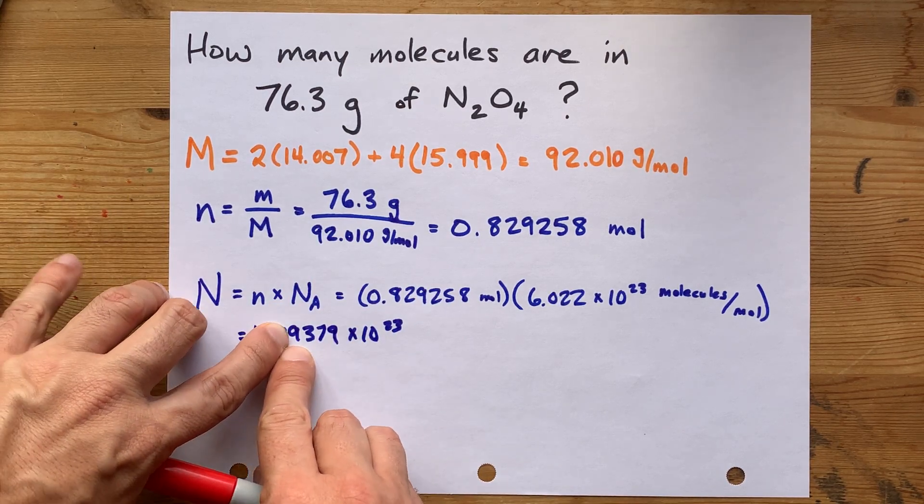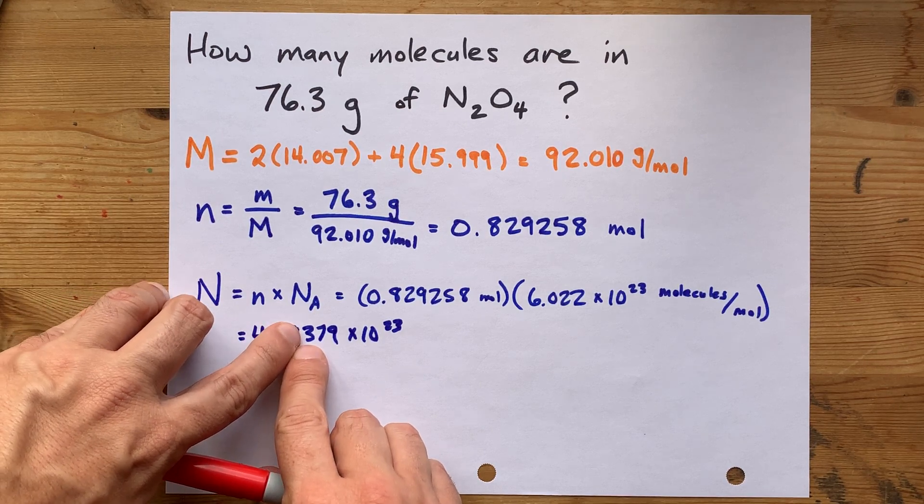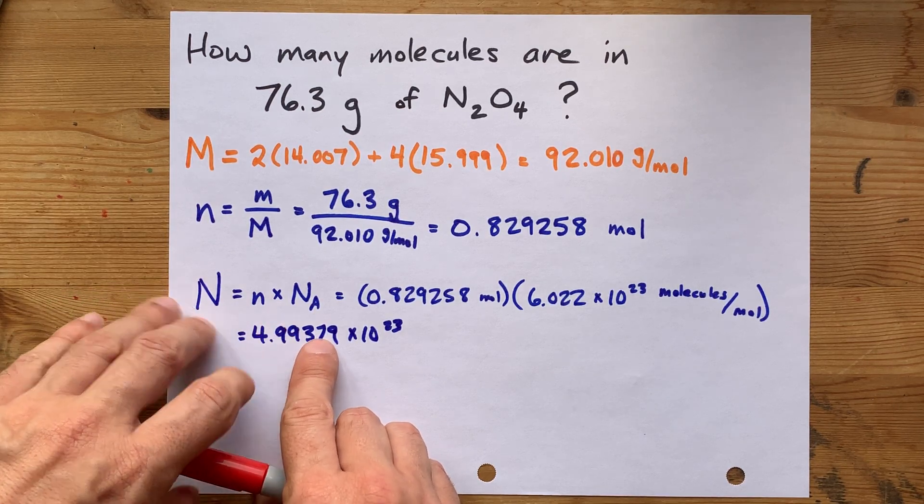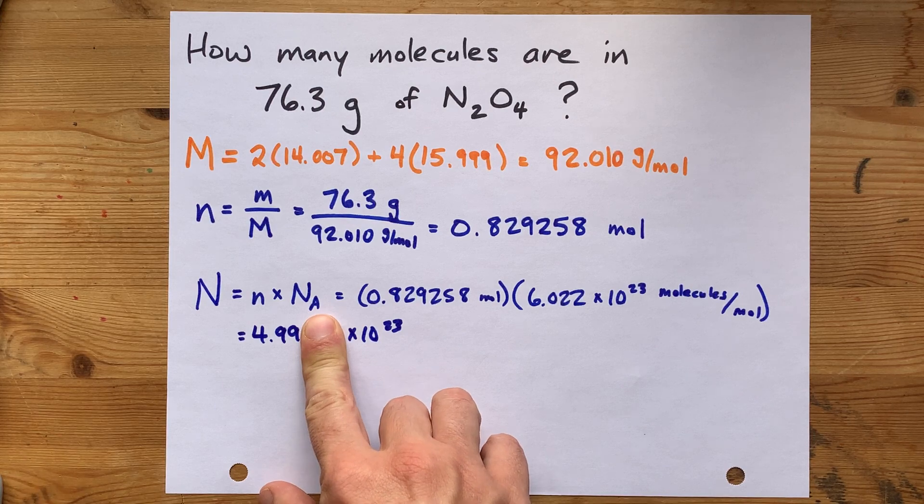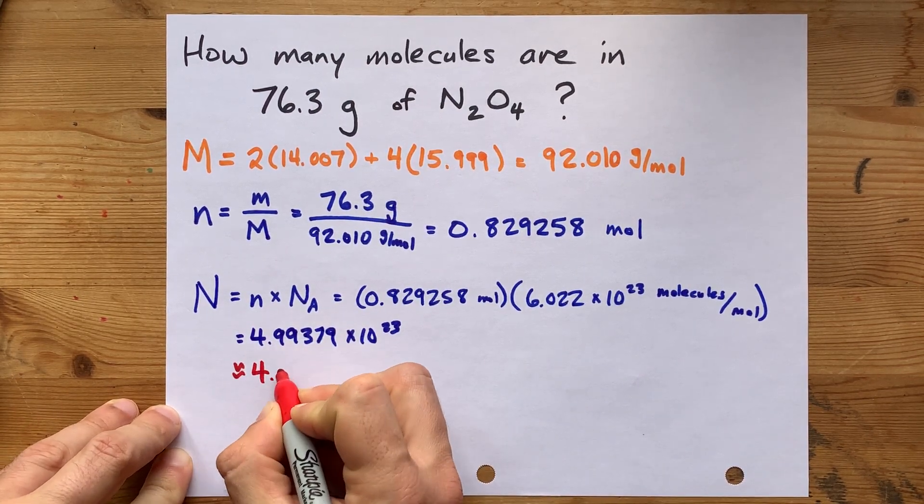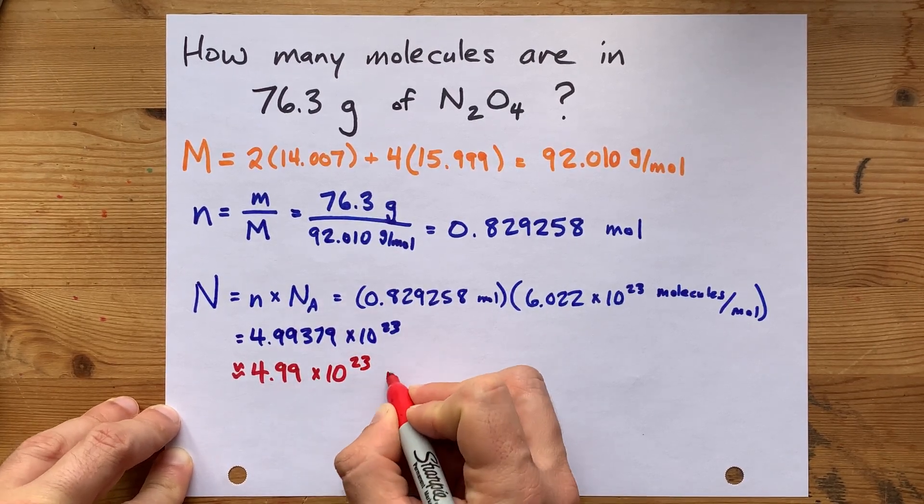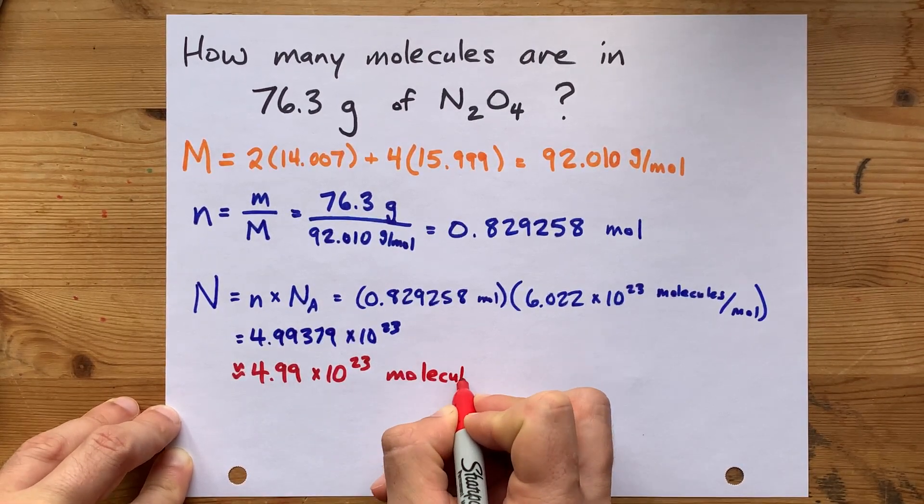That's 1, 2. There's your third one. Look at the next number. It's below 5 and therefore you round it down or chop it straight off. Which means that your final answer here is 4.99 times 10 to the power of 23. And it is a number of molecules.